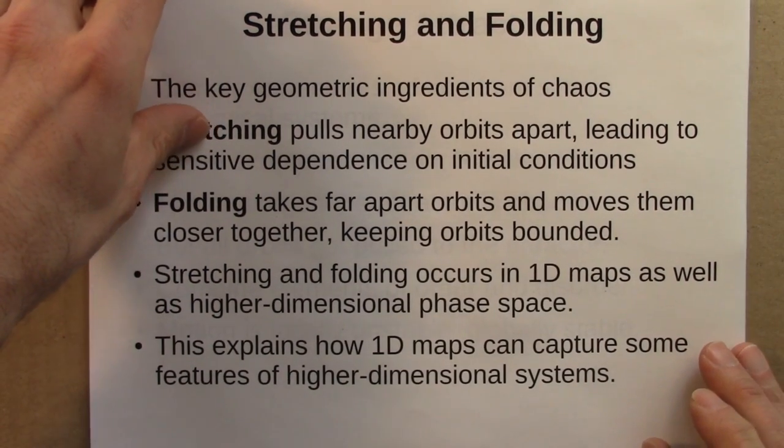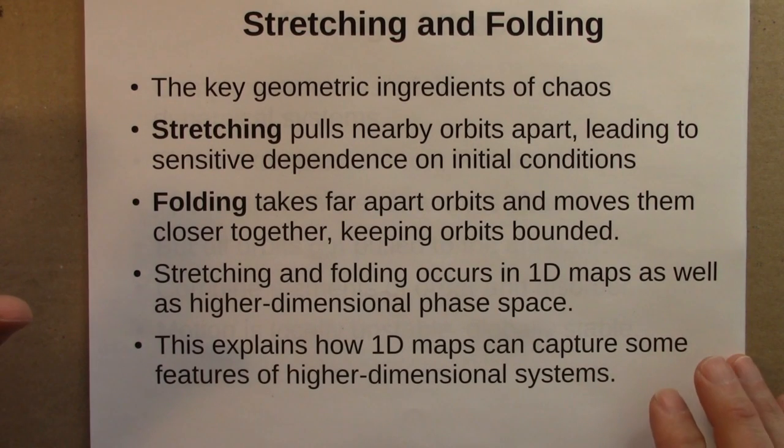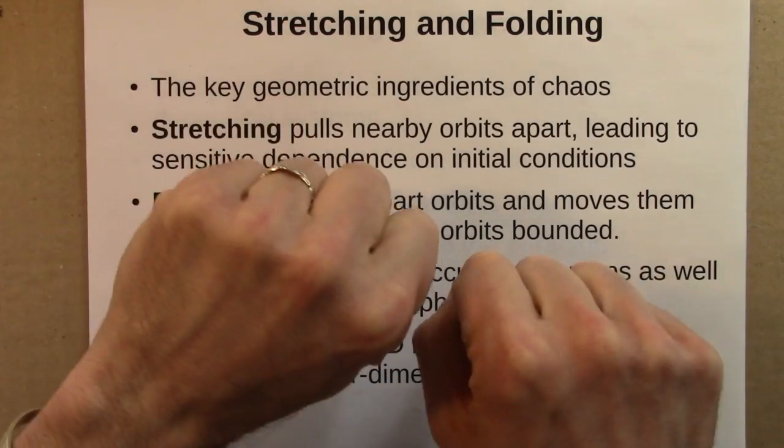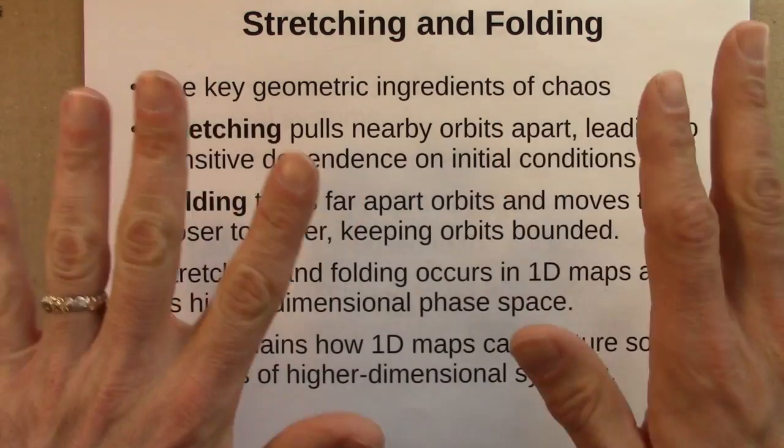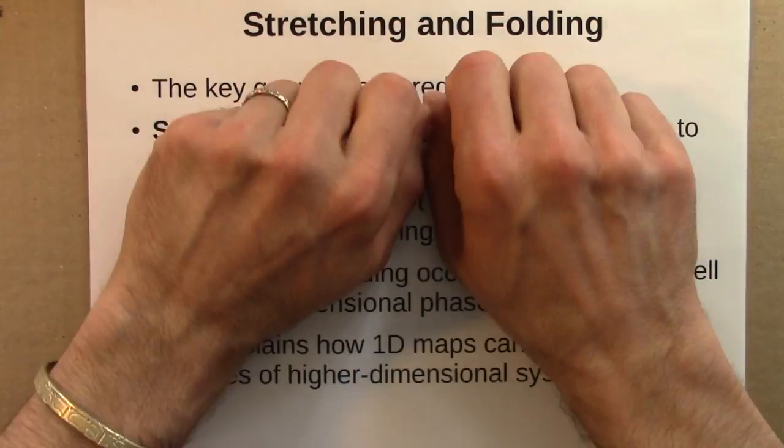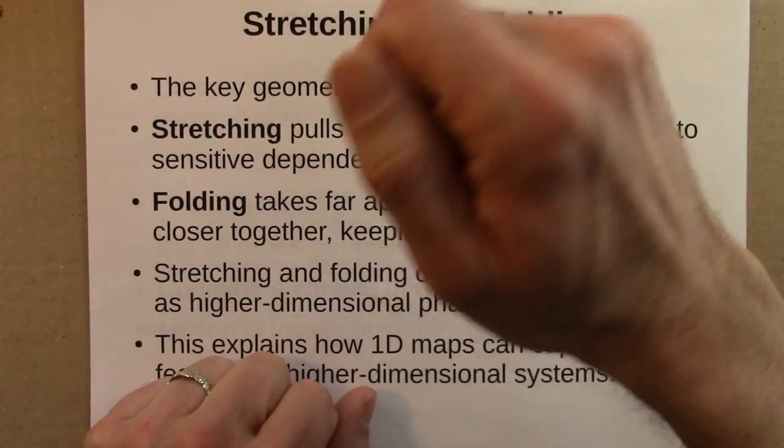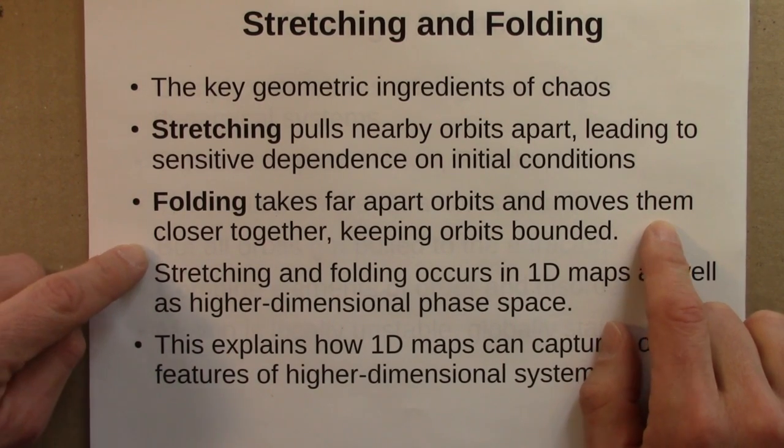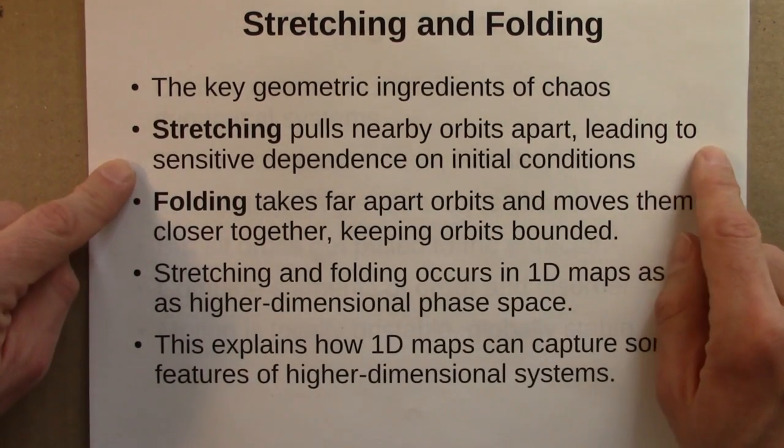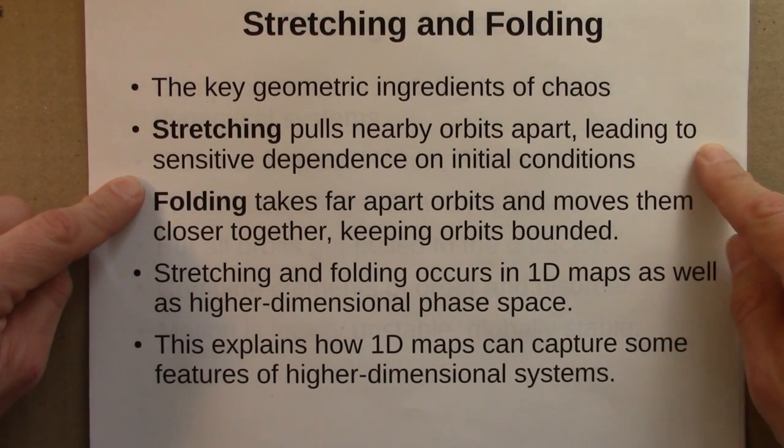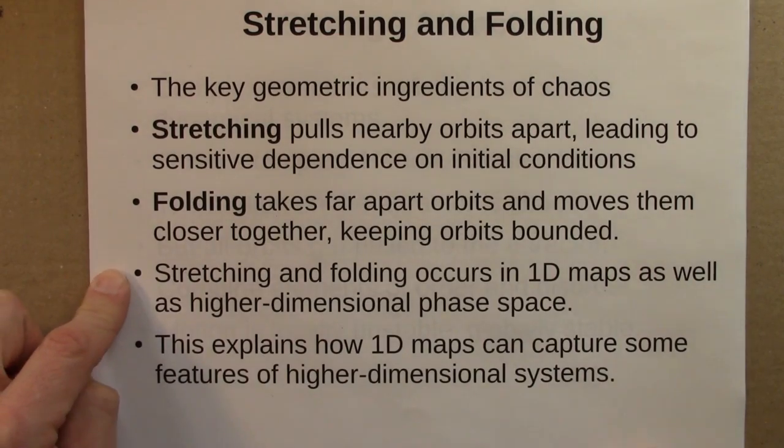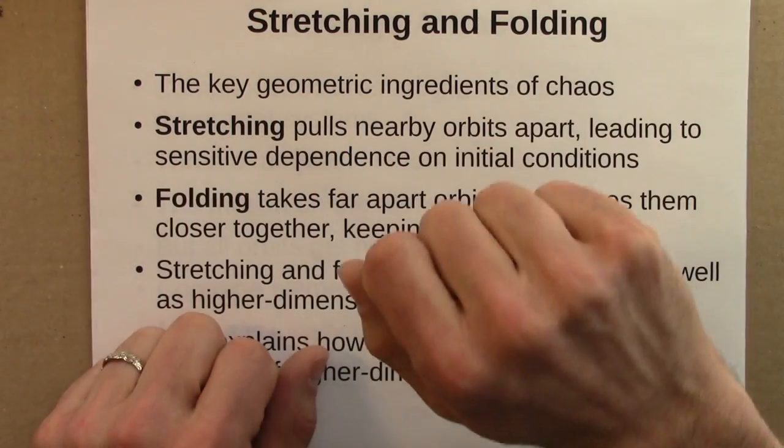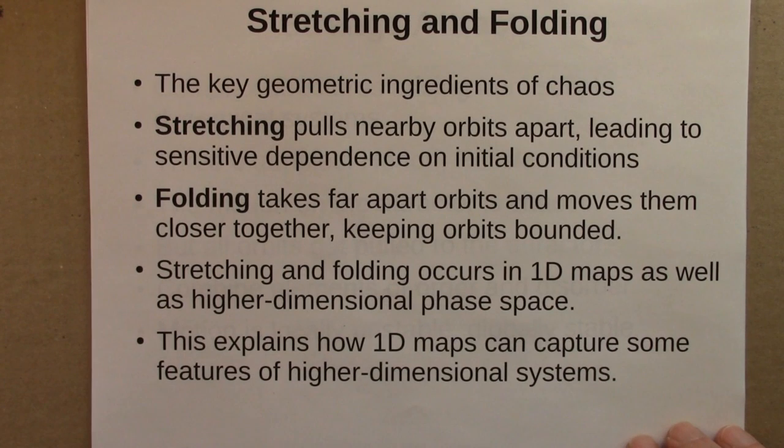Then we looked at this a little bit more geometrically, and I argued that the key ingredients to make a strange attractor, or to make chaos of any sort actually, is stretching and folding. So you need some stretching to pull nearby orbits apart. And the analogy I discussed was kneading dough. So when you knead dough, you stretch it, that pulls things apart, and then you fold it back on itself. So the folding keeps orbits bounded. It takes far apart orbits and moves them closer together. But stretching pulls nearby orbits apart, and that's what leads to the butterfly effect, or sensitive dependence. Now stretching and folding, it may be relatively easy to picture in three-dimensional space, either a space of actual dough and a breadboard, or a phase space. But it occurs in one-dimensional maps as well.